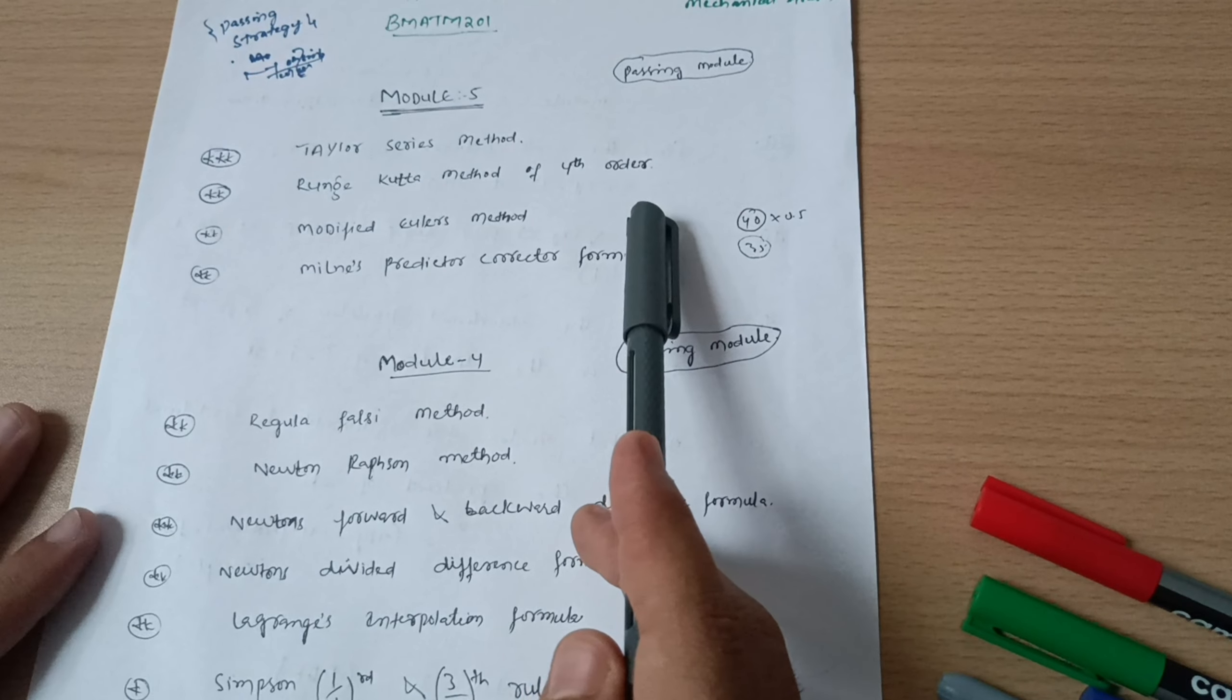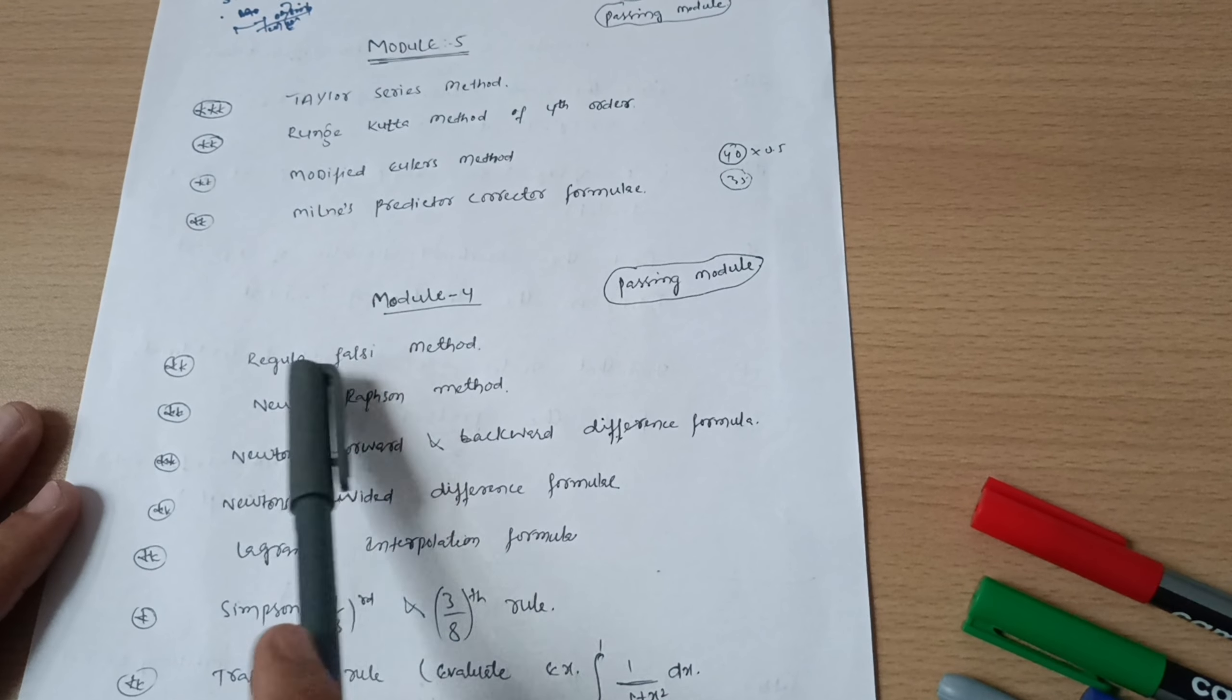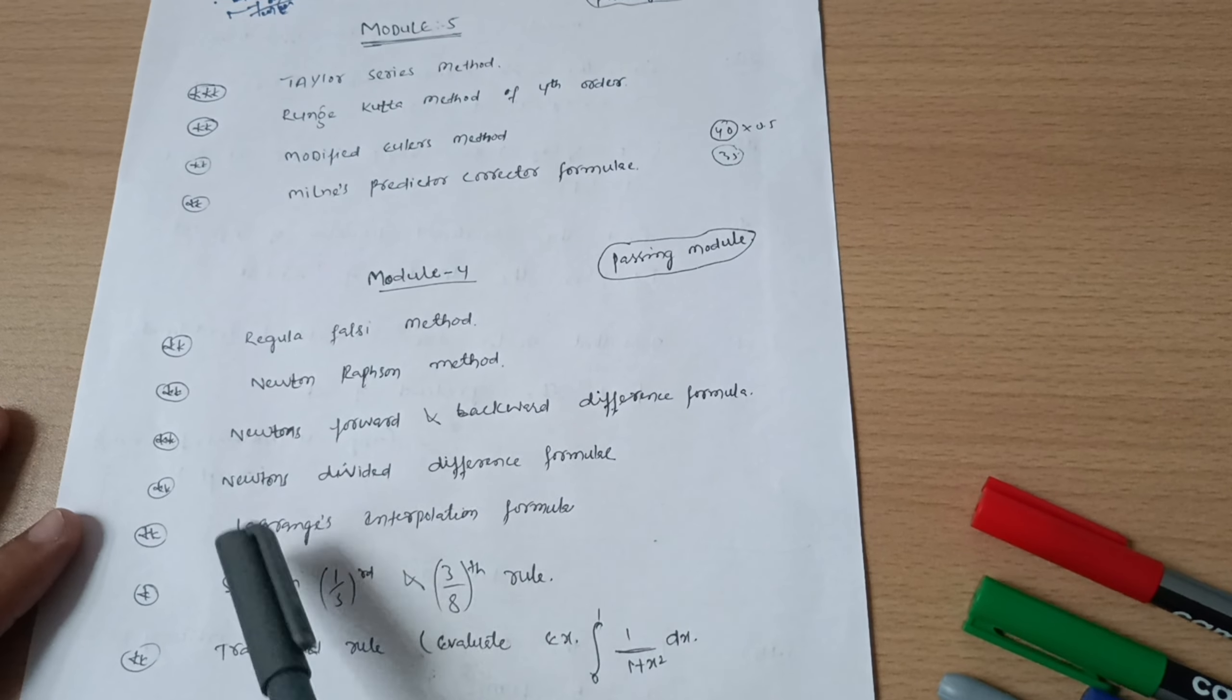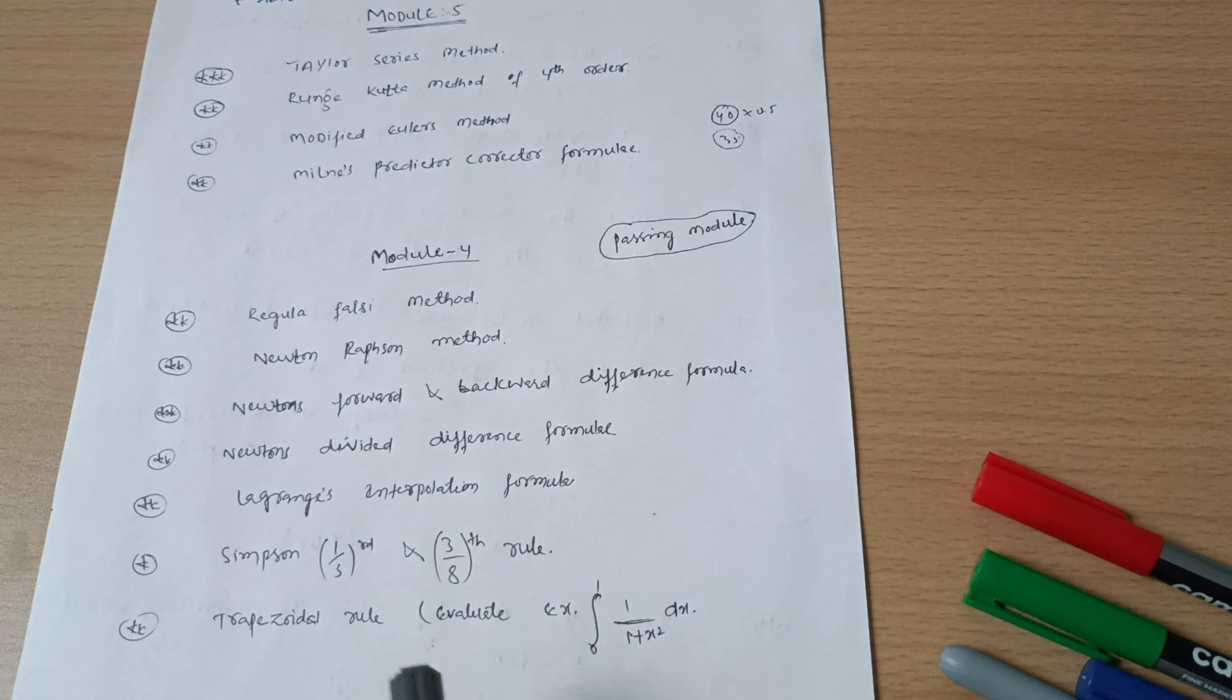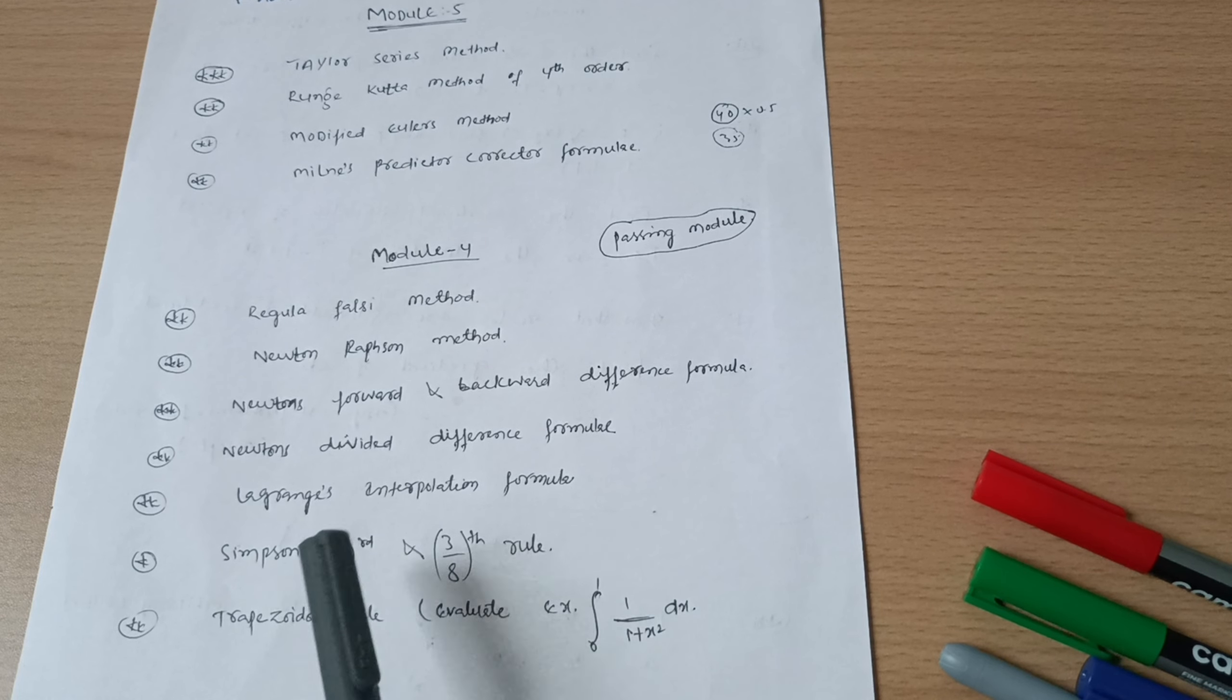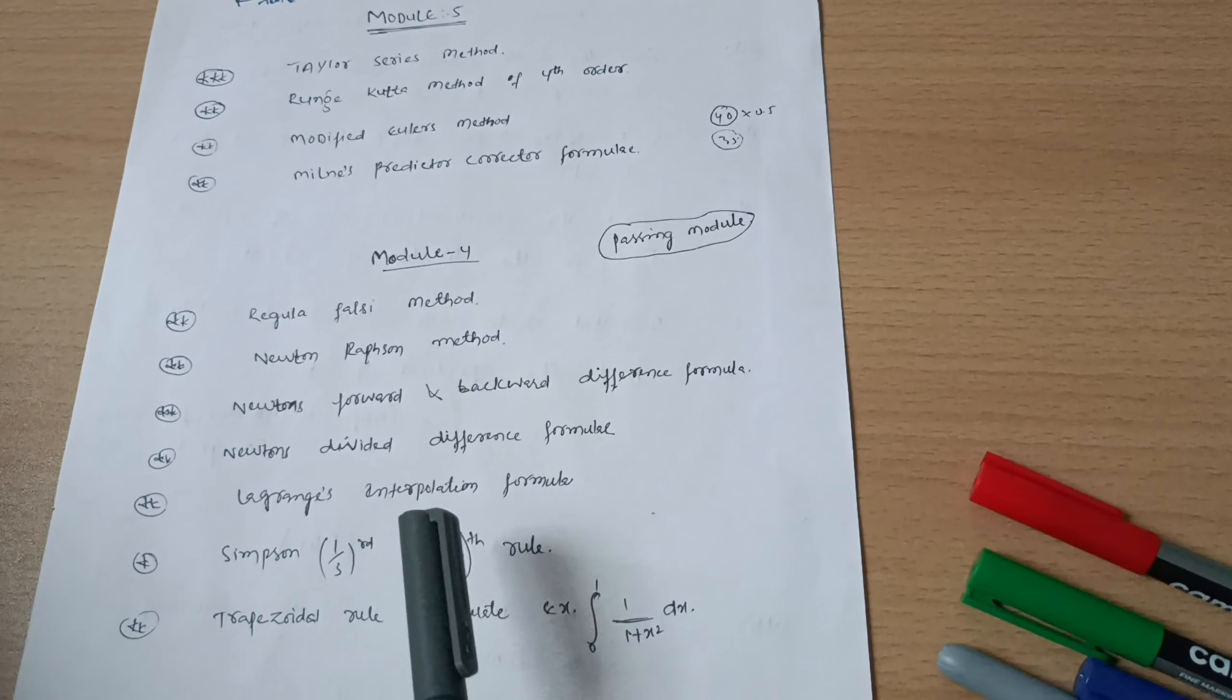Next is Module 4, in which you have to cover the most important topics: Regula Falsi method, definitely one question will be on this for 6 or 7 marks. Newton-Raphson method, Newton's forward and backward difference formula, Newton's divided difference formula, and Lagrange's interpolation formula. The formulas are already in the handbook, you just need to practice. Start preparation now as 25 or 26 days are left for your examination.